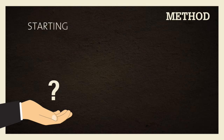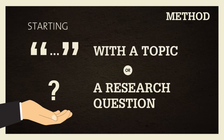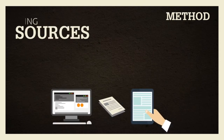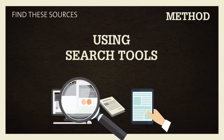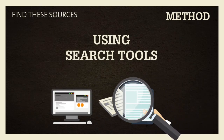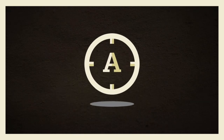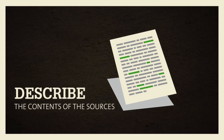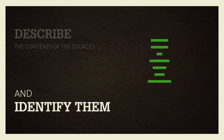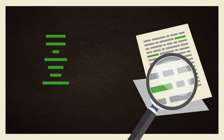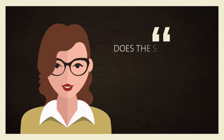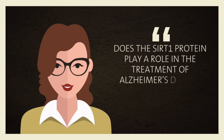Most of the time, you will start your work based off a topic or a research question given by an instructor. You will be asked to respond to this question by using sources. The goal is then to find these sources using search tools. How do you do it? Well, by using keywords. Why? Simply because we use keywords to describe the contents of sources and identify them. How do you efficiently find this list of keywords? Let's go back to Anna's example with the question: does the SIRT1 protein play a role in the treatment of Alzheimer's disease?